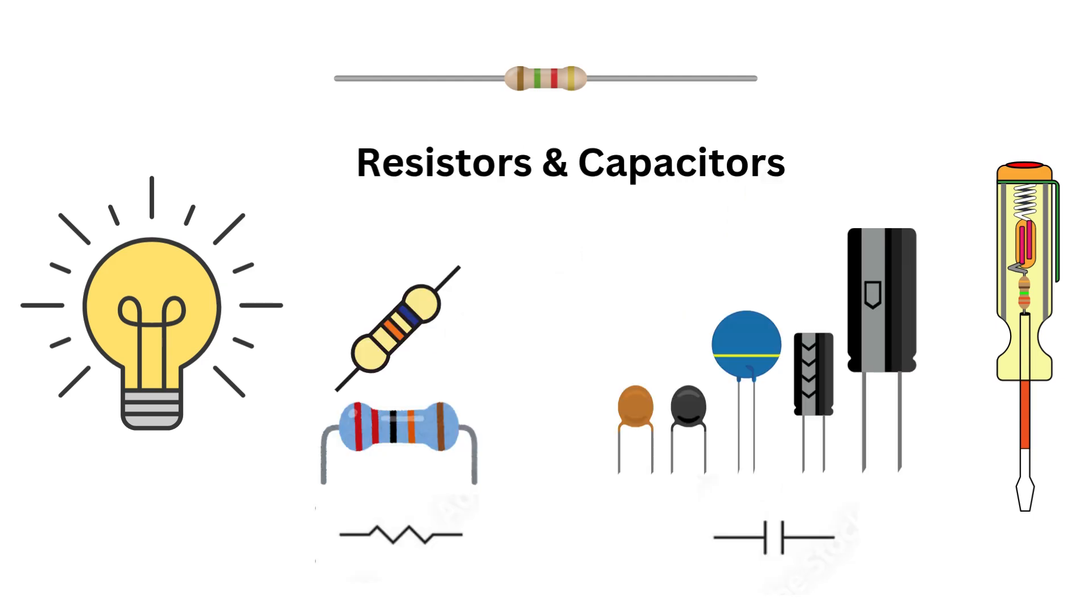Resistors and capacitors are the building blocks of circuits. Resistors control current flow while capacitors store and release electrical energy. Knowing how to use these is fundamental for designing circuits.